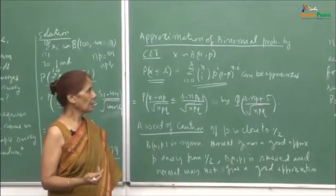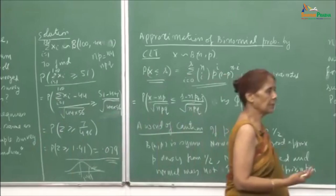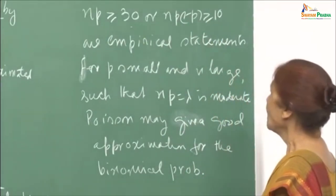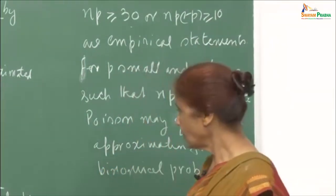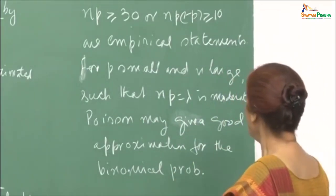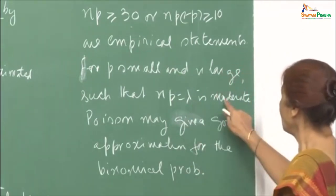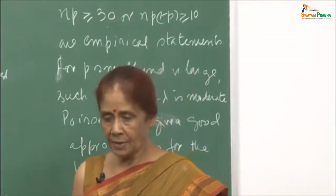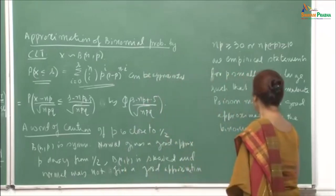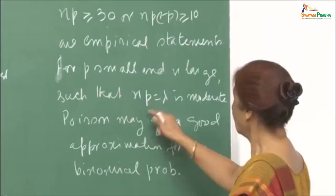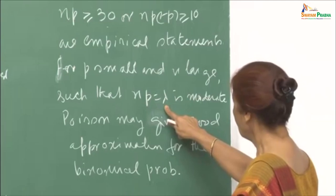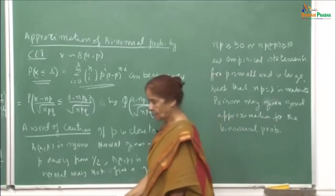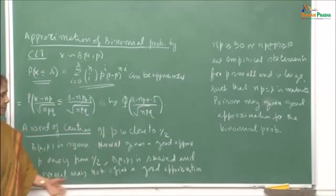These are empirical statements: when p is close to half, the binomial is symmetric, and since the normal is also symmetric about its mean, the normal gives a good approximation. When p is away from half, the binomial is skewed, and the normal may not give a good approximation. It is often said that if np ≥ 30 or np(1−p) ≥ 10, the CLT gives a good approximation of binomial probabilities. For p small and n large such that np = λ is moderate, a Poisson approximation may be better. These approximations are very helpful.